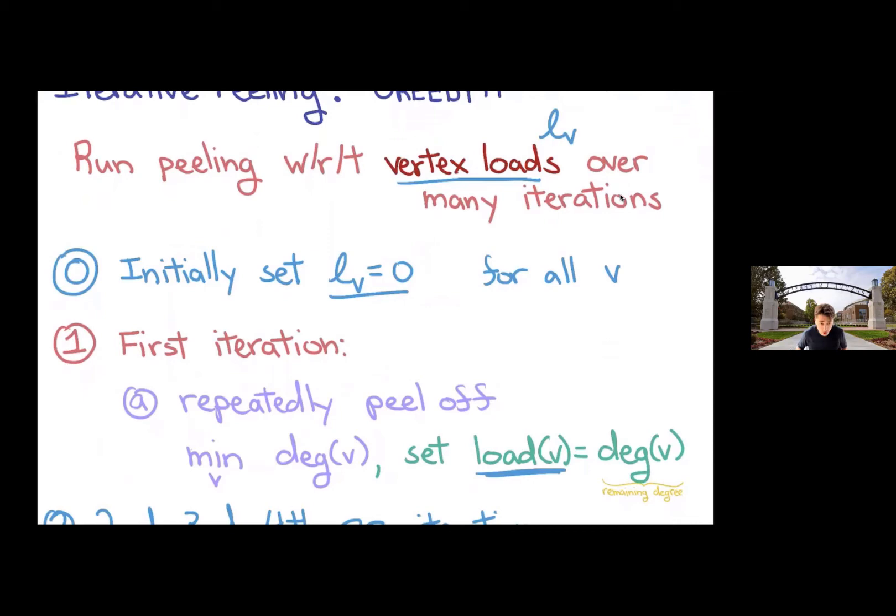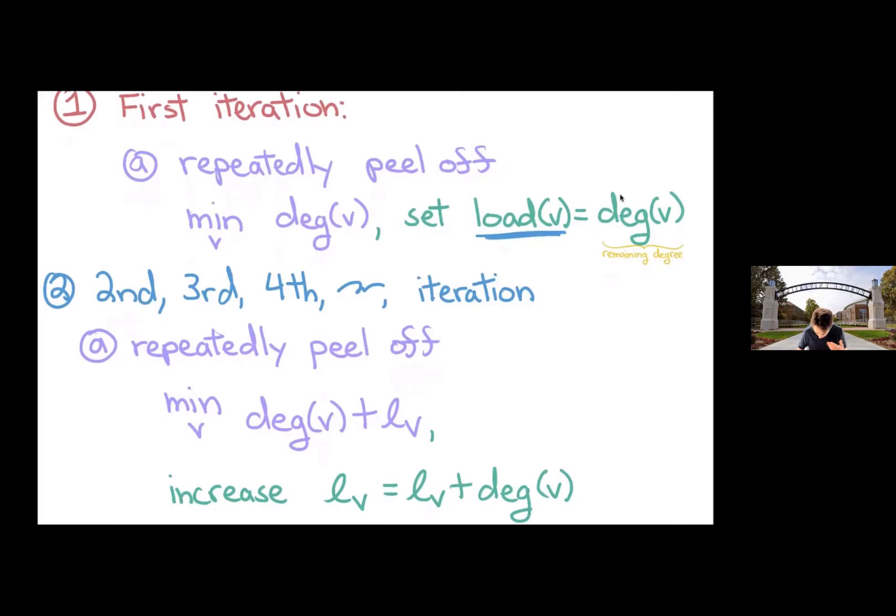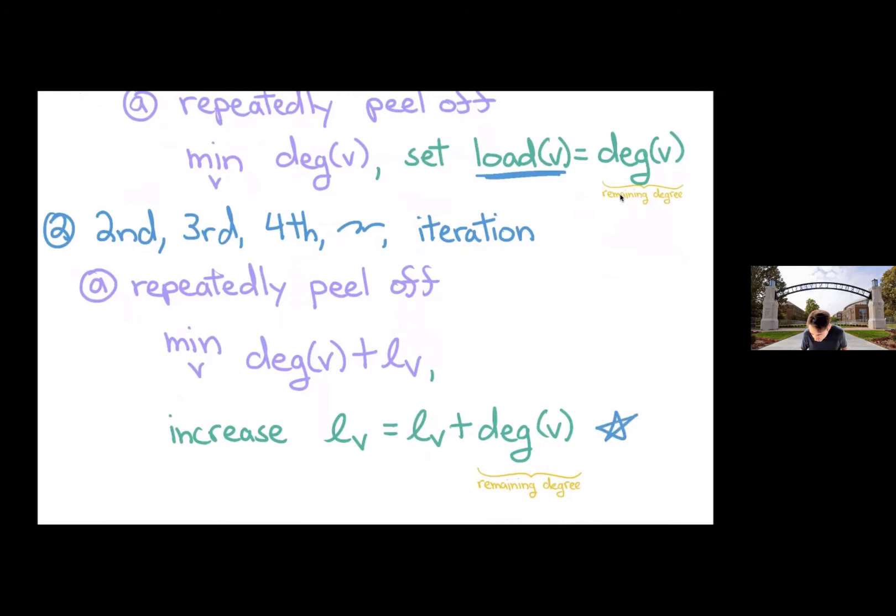And then we're going to build on this in all the subsequent iterations. So take the second iteration. Rather than just peeling off the vertex with minimum degree, we're going to peel off the vertex that minimizes the degree plus the load, or sort of what the load will become. So this is anticipating the future load. In this sense, we're keeping track of what we've peeled before and those degrees that we've incurred. And at the end of each iteration, we will increase the load by that peeled degree in that iteration.